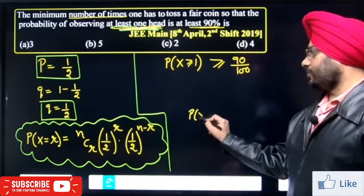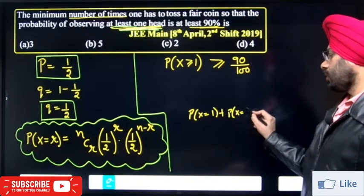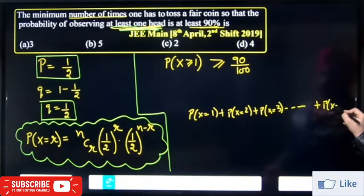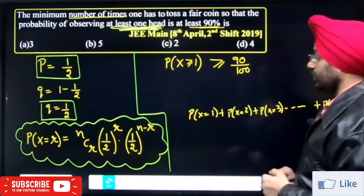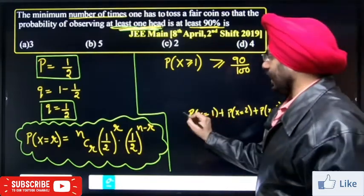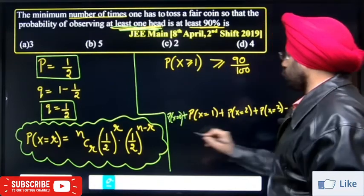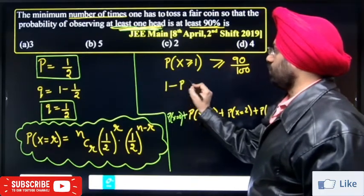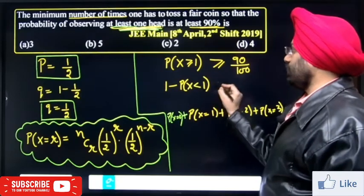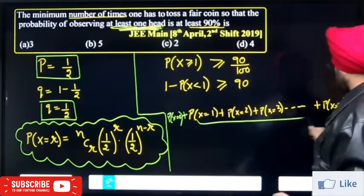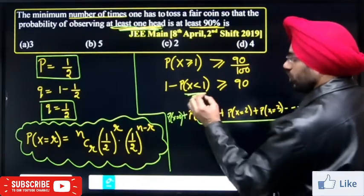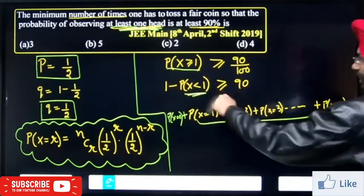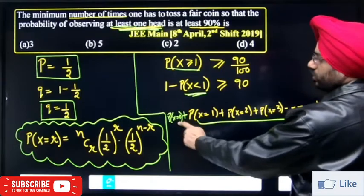Since 'at least one' covers all terms from 1 up to n, this would be lengthy to compute directly. Instead, we use the complement: total probability equals 1, so P(x ≥ 1) equals 1 minus P(x less than 1), which means 1 minus P(x = 0).